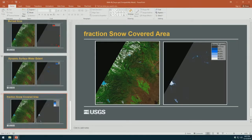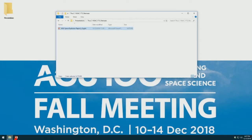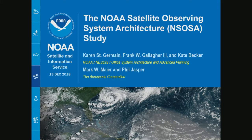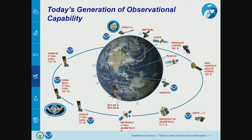Our next speaker is Frank Gallagher from NOAA, talking about the NOAA Satellite Observing System Architecture SOSA Study. The satellites currently in orbit are actually doing quite well — we just launched our most recent JPSS and GOES-17, which are doing well and giving a good amount of new data. We also take advantage of partner data. We have in operational service the GOES series, the JPSS series, and all of our partners, plus Discover at L1.